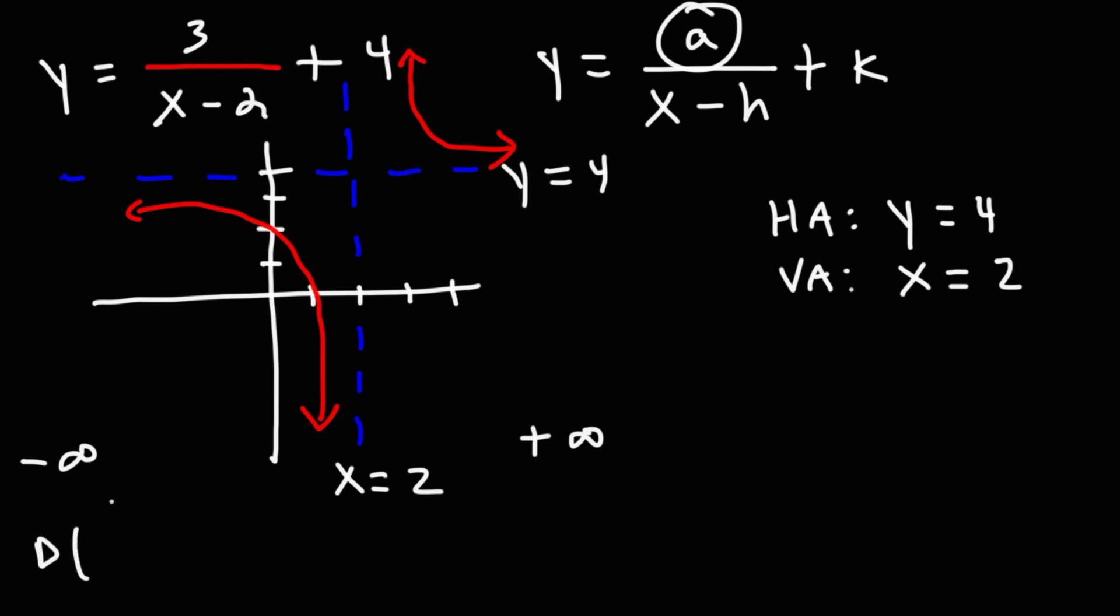So the domain is going to be negative infinity to 2, union 2 to infinity. So x can be anything except 2, the vertical asymptote.